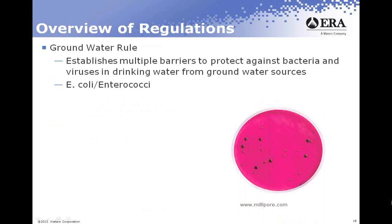The groundwater rule established multiple barriers to protect against bacteria and viruses in drinking water specifically from groundwater sources. Two analytes specified were E. coli and enterococci. The purpose was to provide increased protection against microbial pathogens in public water systems using groundwater, particularly those susceptible to fecal contamination. Systems had to do source water monitoring if they had a failure under the total coliform rule, using E. coli and enterococci as the two indicators to determine fecal contamination. A regulation like this would drive the need for an E. coli or enterococci sample quantitatively.